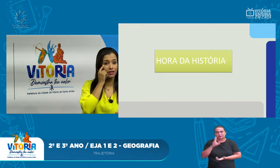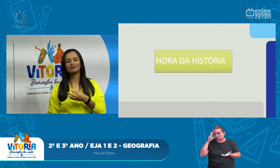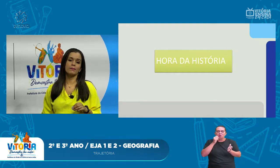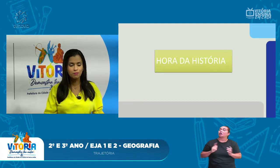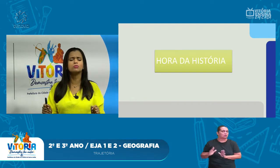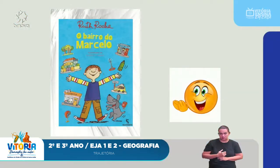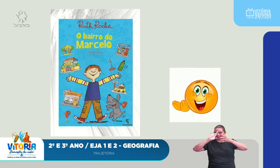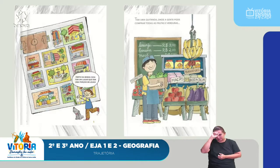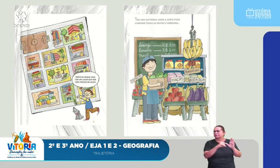Story time! I told you there was a story here — a really nice book by a phenomenal author named Ruth Rocha. It will bring a lot of learning to everyone watching this Geography class. The book is called 'O Bairro do Marcelo.' Look at the little character — that boy is Marcelo, with his little dog, and several elements on the cover. Near my house, there is a place with a bunch of shops. There is a quitanda where we can buy all kinds of fruits and vegetables.